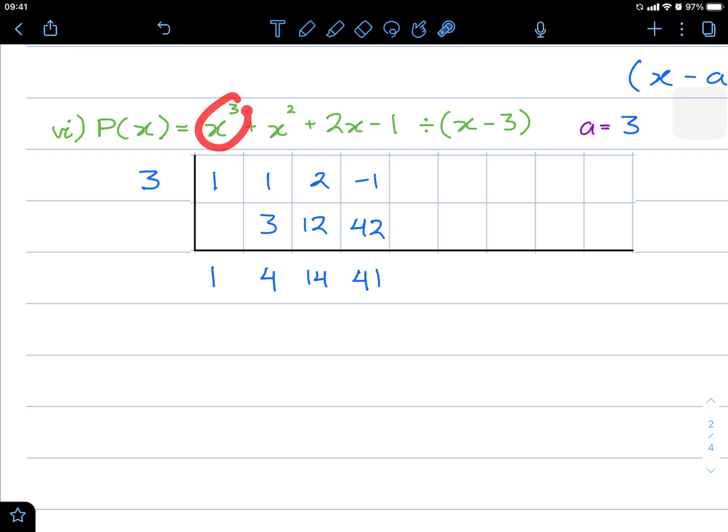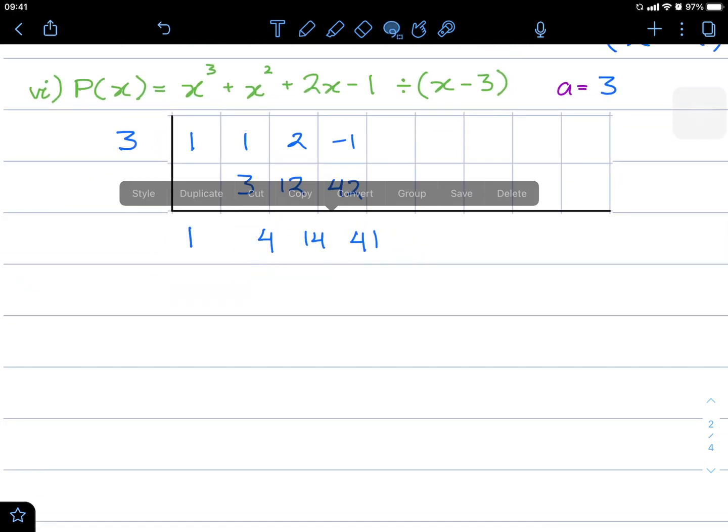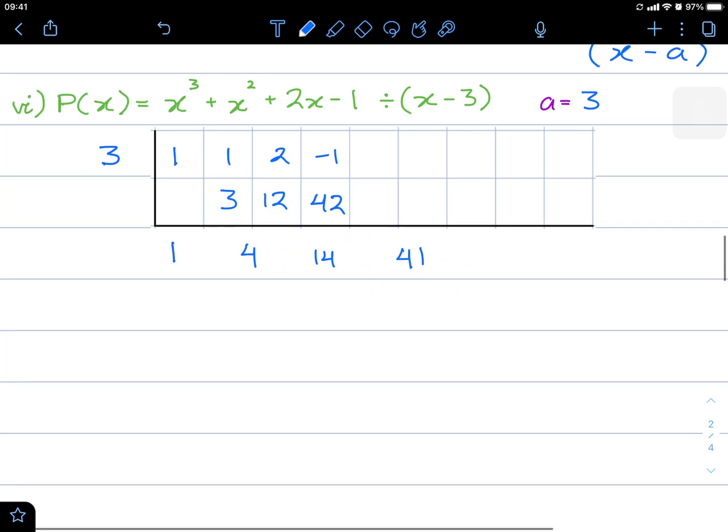Now, because we started on x cubed, our quotient is always going to be one power less: x squared plus x plus 14. And this last value is our remainder. There we have it, we've done our division.